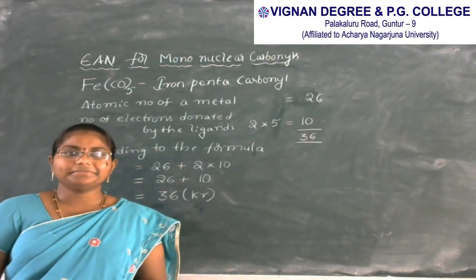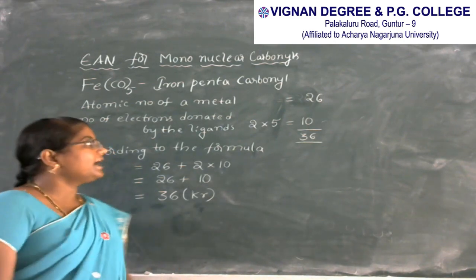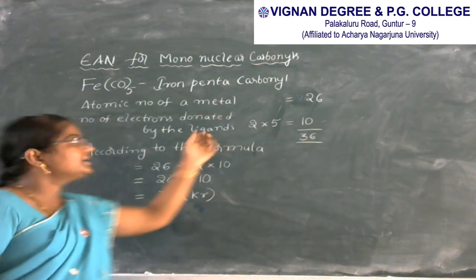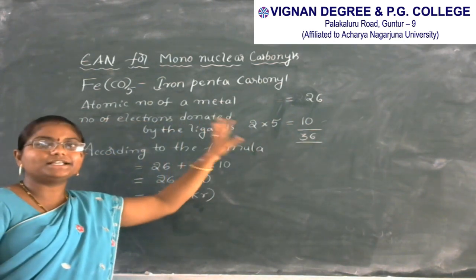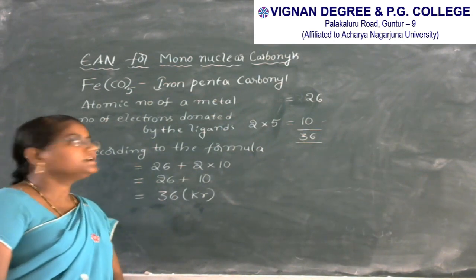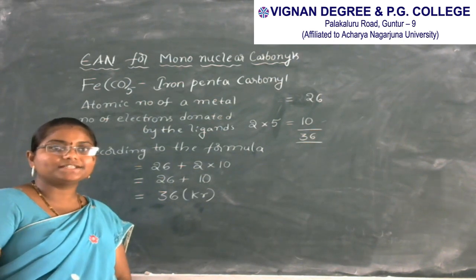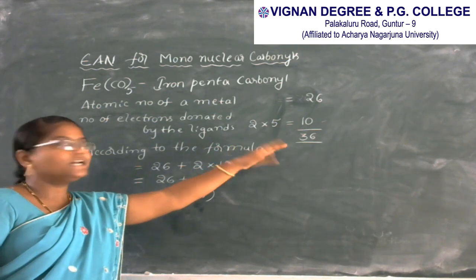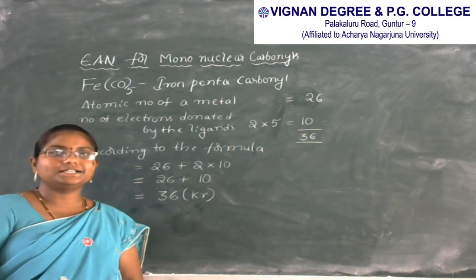In iron pentacarbonyl, the atomic number of iron is 26. The number of electrons donated from the ligands: there are 5 ligands present in iron pentacarbonyl, and each ligand donates 2 electrons. So we take 2 into 5, which is 10 electrons. Total is 26 plus 10, which is 36.